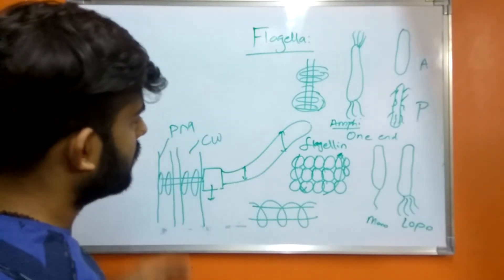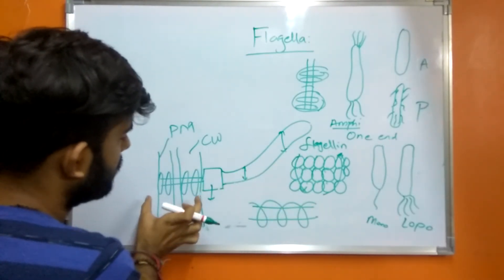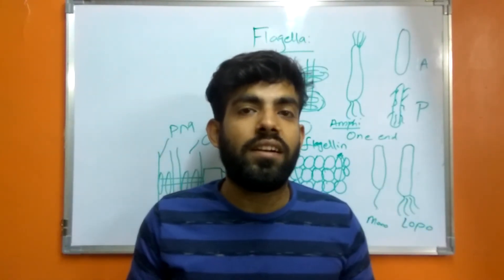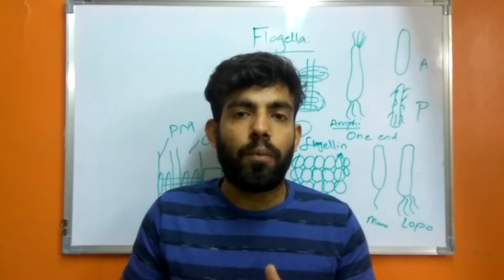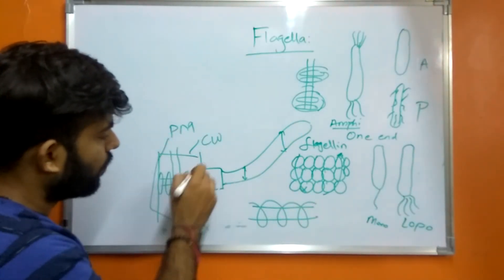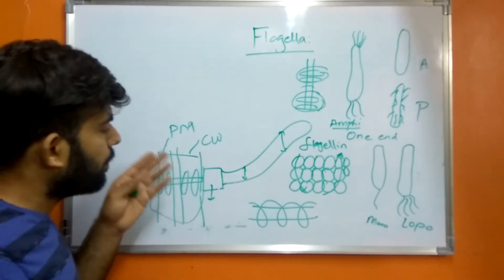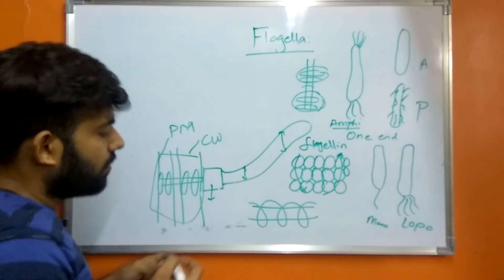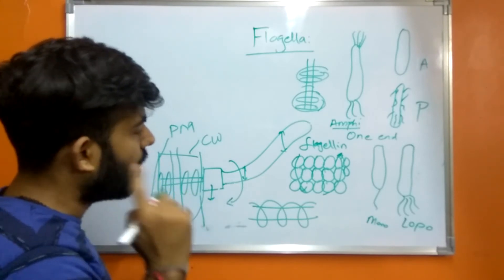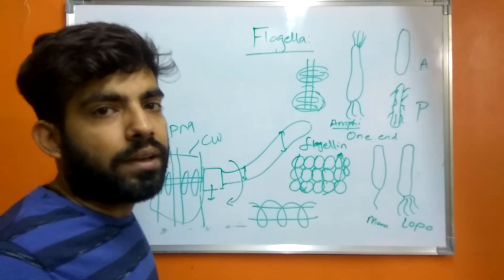The flagellum consists of the filament, the hook, and the basal body. Overall, the flagellum is a semi-rigid helical structure responsible for the mobility of an organism by rotation driven from the basal body. The rotation of the flagella can be clockwise or counterclockwise, similar to the shaft of an electric motor.